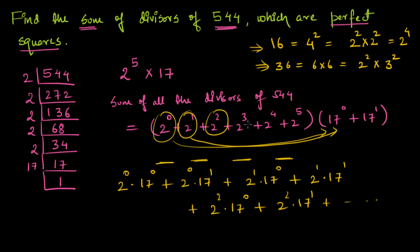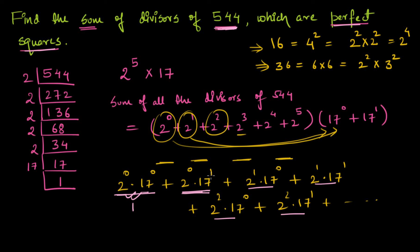Continuing the expansion: 2² × 17⁰, 2² × 17¹, and so on. The key point is each term represents one factor of 544. We are looking for factors that are perfect squares, meaning all prime factor powers must be even. So 2² × 17⁰ qualifies, but 2¹ × 17⁰ does not since 2 appears with odd power 1.